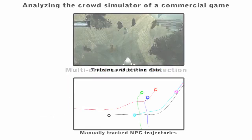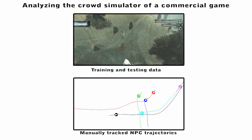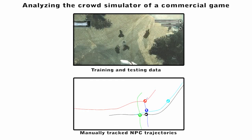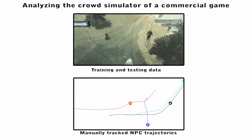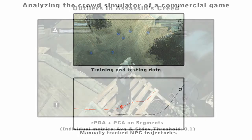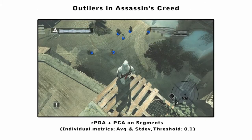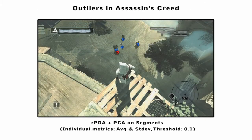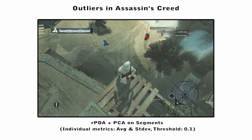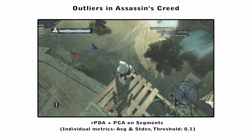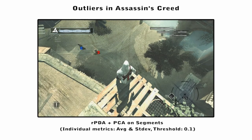Finally, we show an example from the game Assassin's Creed. We analyzed manually tracked trajectories from the game across a large variety of metrics. Following the approach outlined in the paper, we were able to perform the entire analysis in 200 milliseconds.